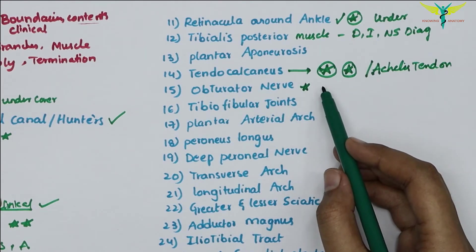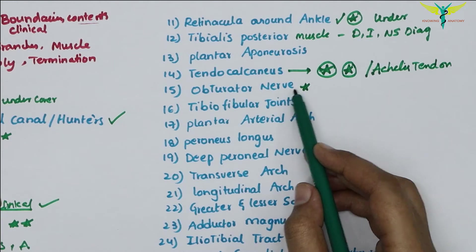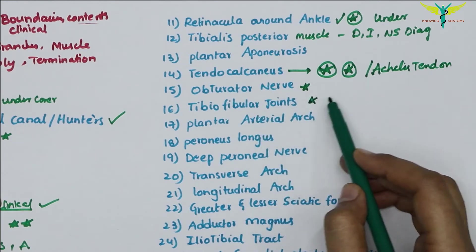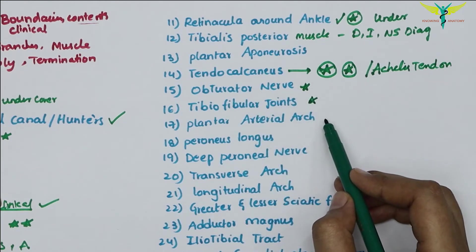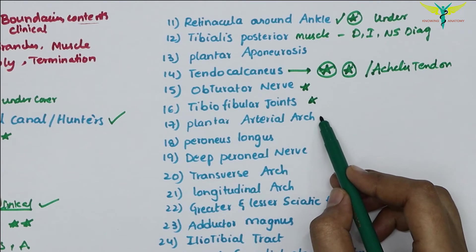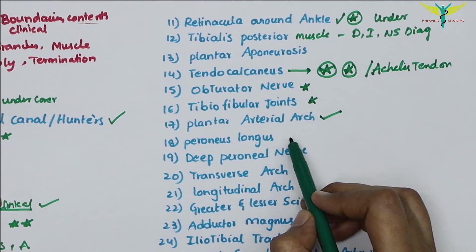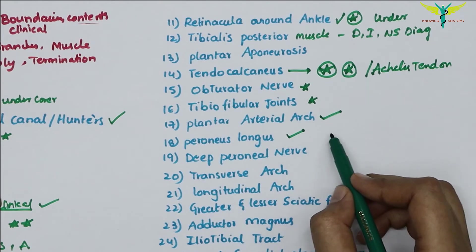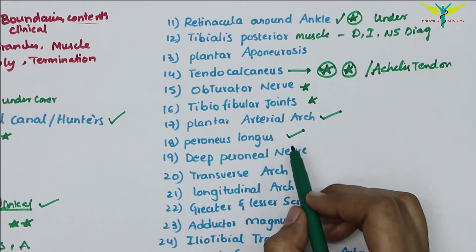The obturator nerve is important — write about its course, branches, and the muscles it supplies, with a small diagram. The tibiofibular joint is also important. The plantar arterial arch is an important question.